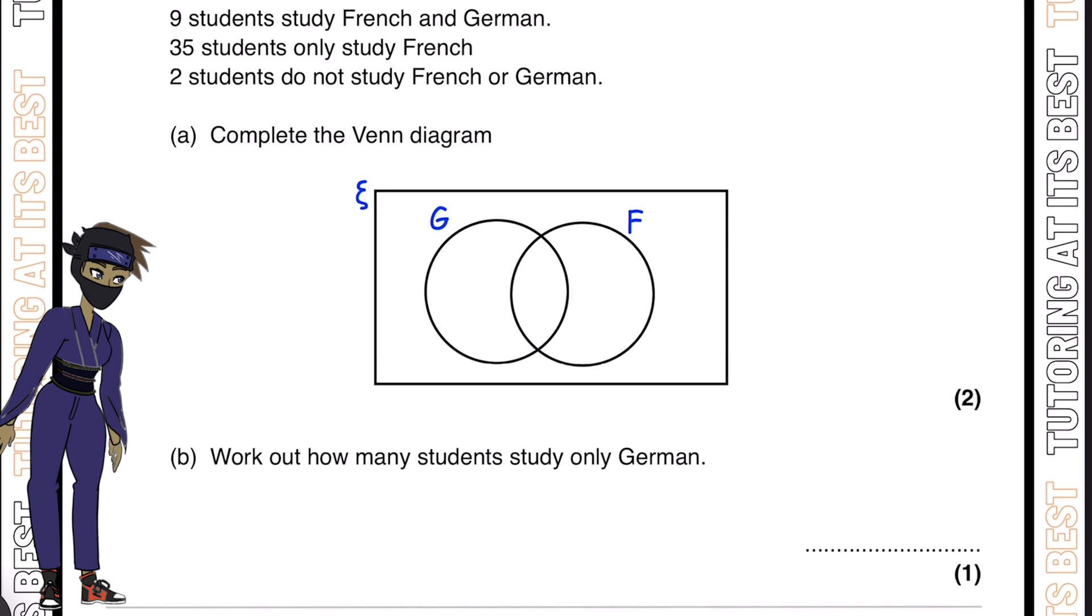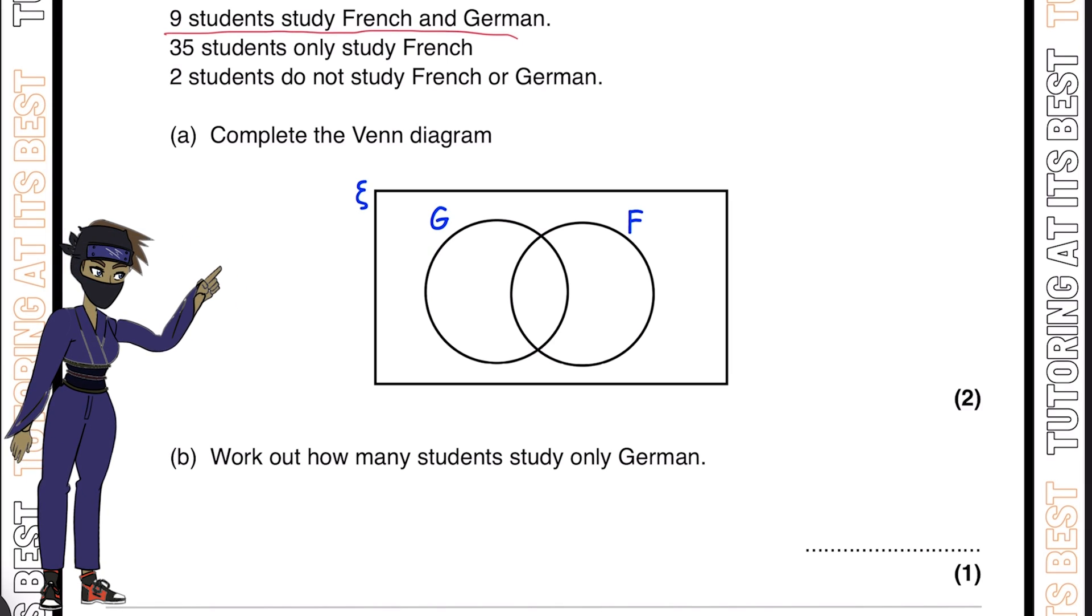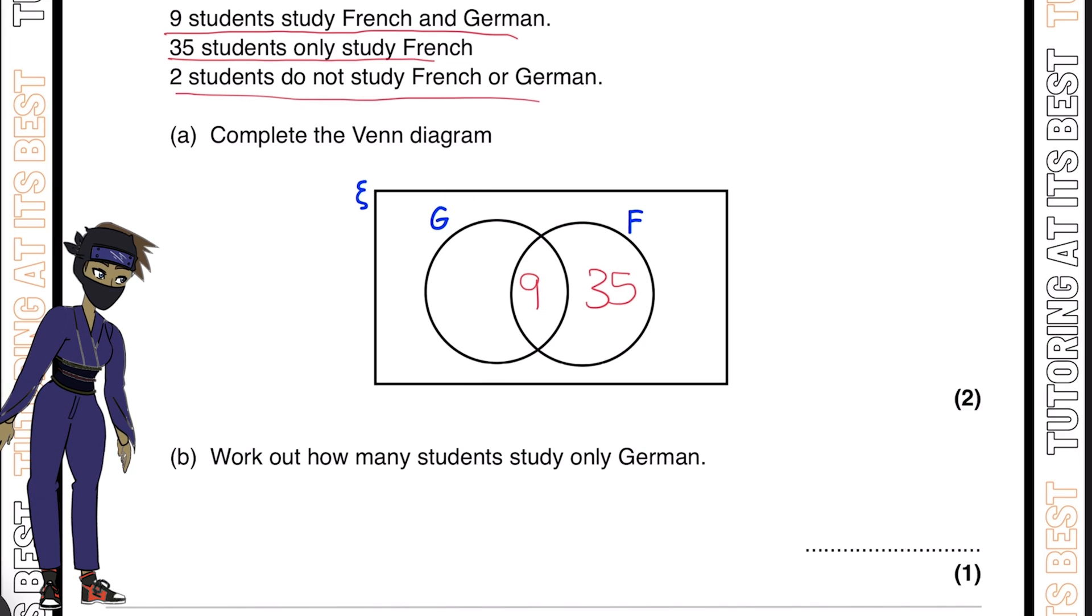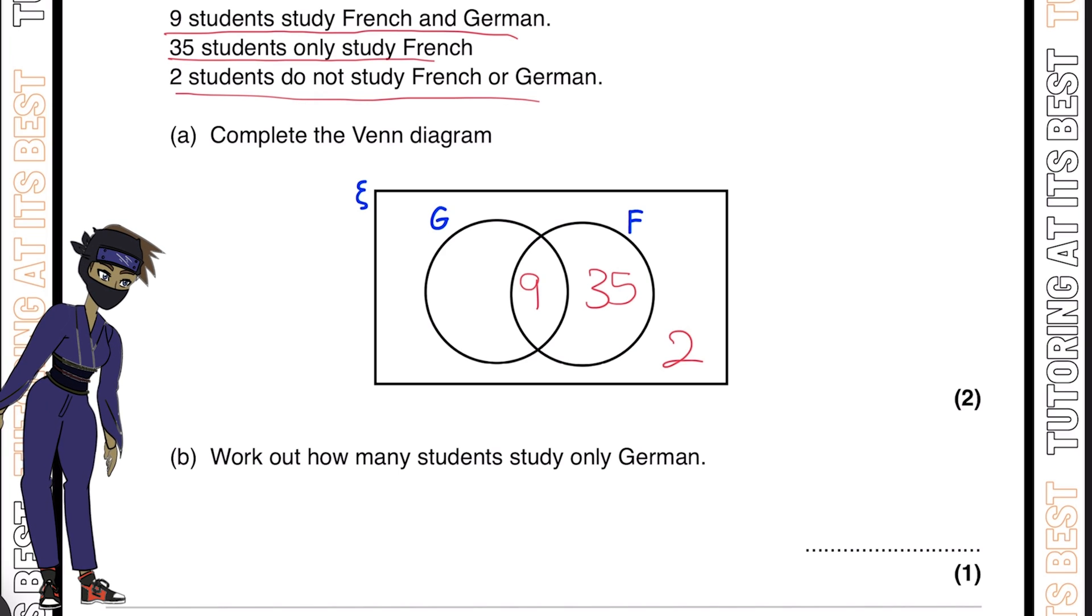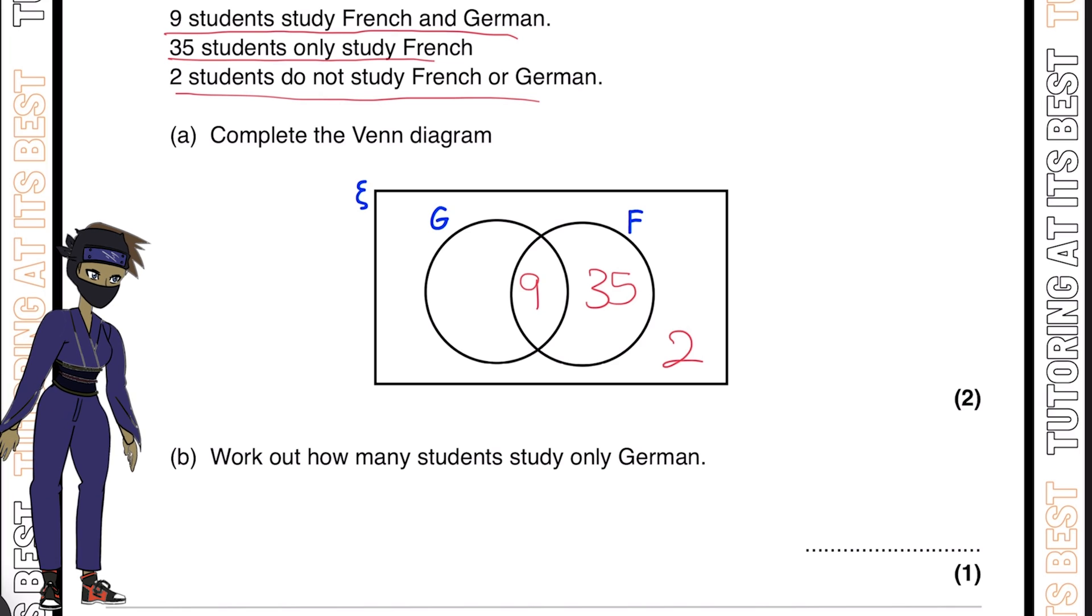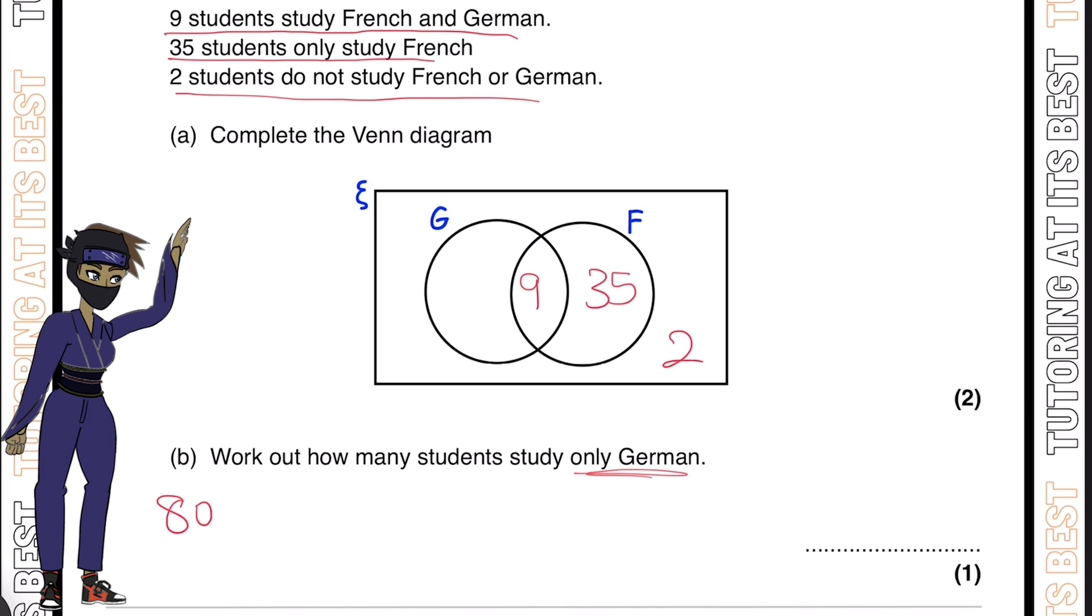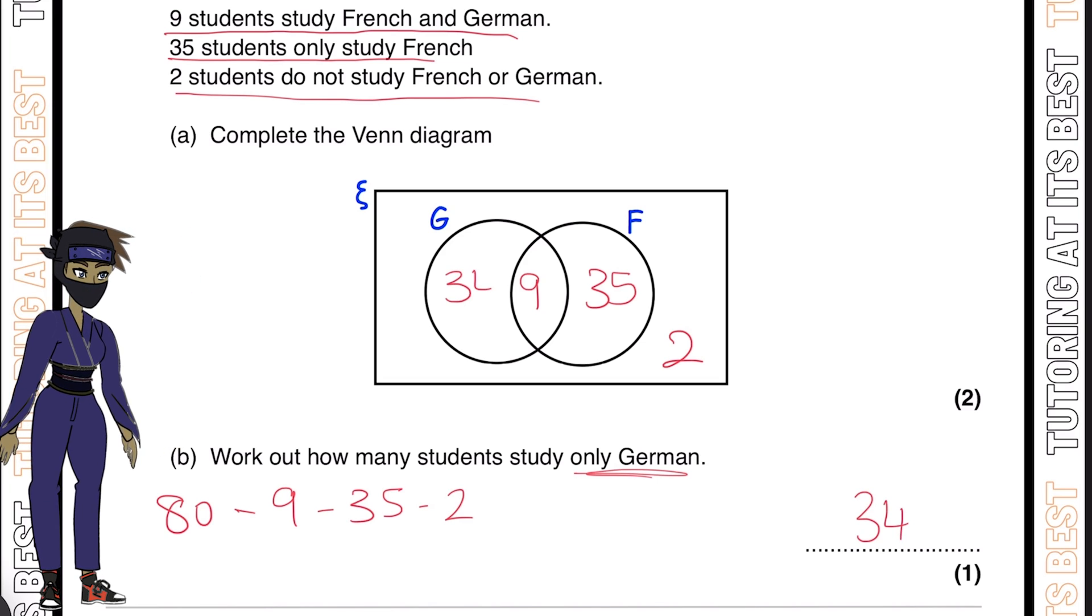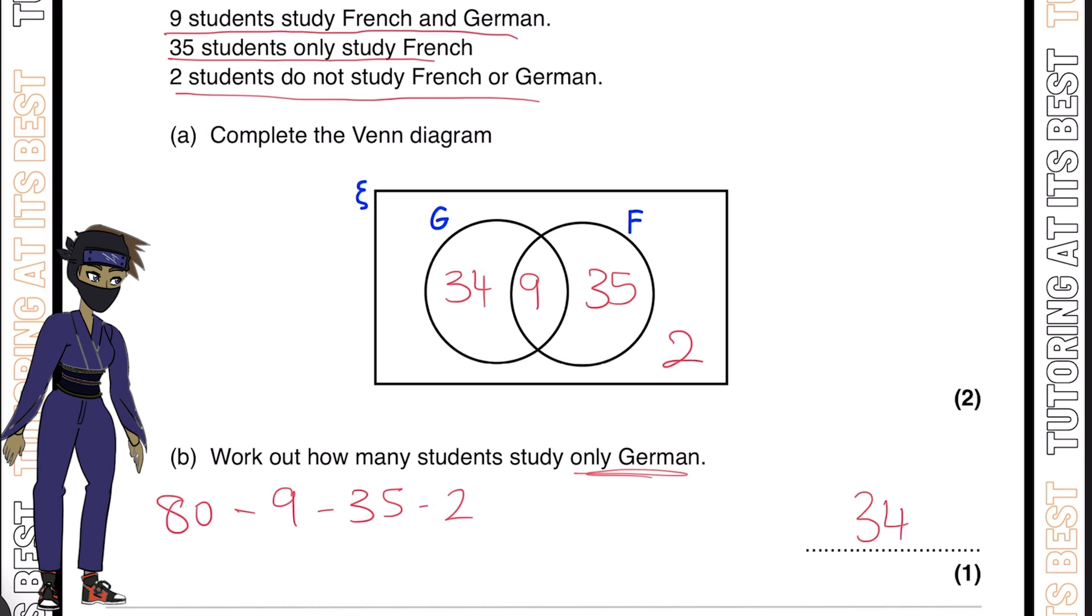Question 3: They've given us 80 students in total. 9 study French and German, so we put that in the center. 35 students only study French, so that's 35 here. 2 students do not study French or German. It states work out how many students study only German. So we'll have 80 minus 9 minus 35 minus 2, which gives us 34. So 34 students only studied German.